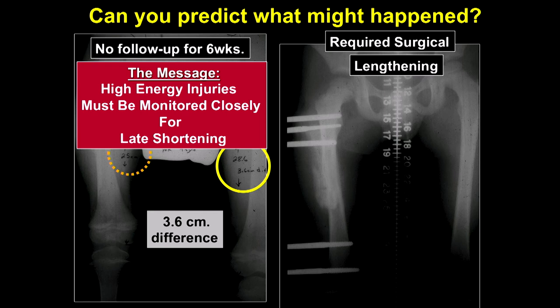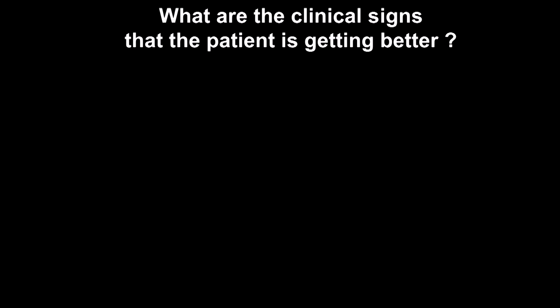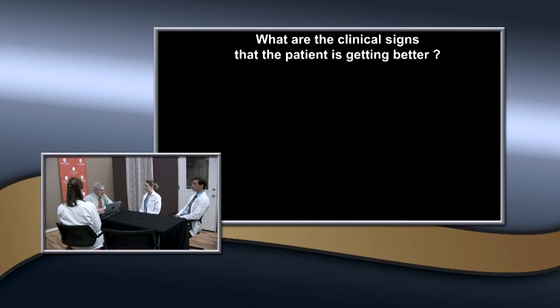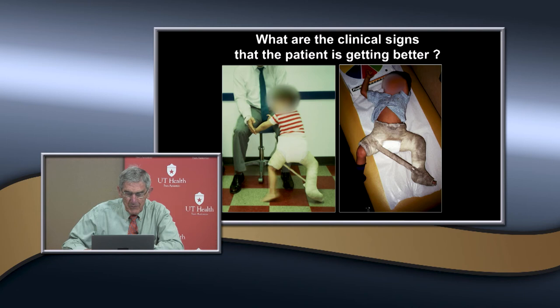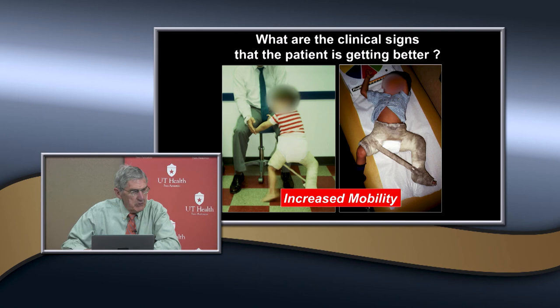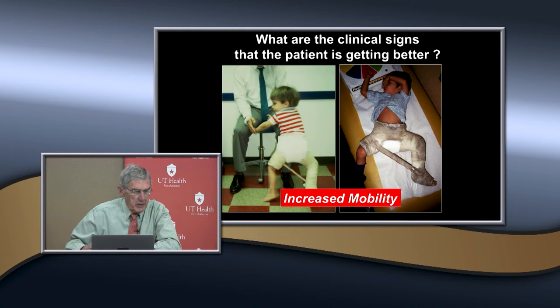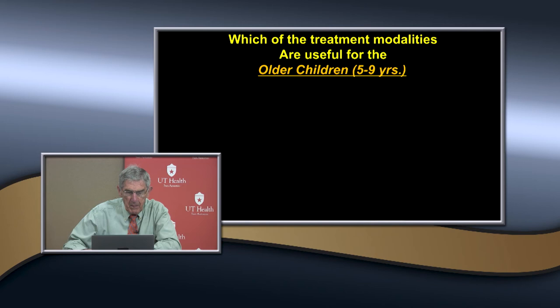How do you know the patient is getting better? They'll start getting more active—you can see them getting up and crawling or walking around. Tell the parents they may do this, but it indicates they're getting better. If there's no internal stability when they move, they'll get a lot of spasm. When they're moving without pain, that tells you you've got internal stability.